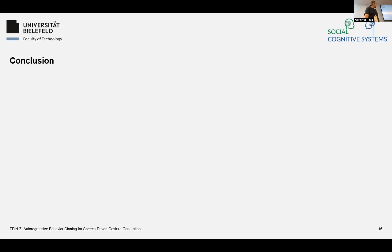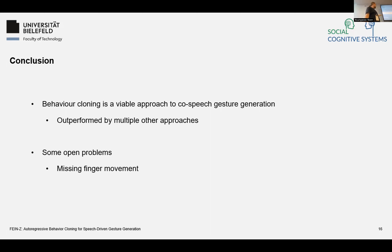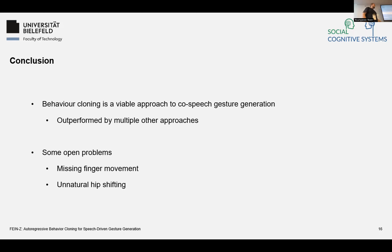In conclusion, behaviour cloning is a viable approach for co-speech gesture generation, but it is outperformed by multiple other approaches as we've seen. There are open problems like missing finger movement — we don't see any real finger movements in our generation — and some unnatural hip shifting, where the agent jumps from one leg to the other, which looks very unnatural if you don't cut it off at the hip. But you can see it in the evaluation. Thank you very much.